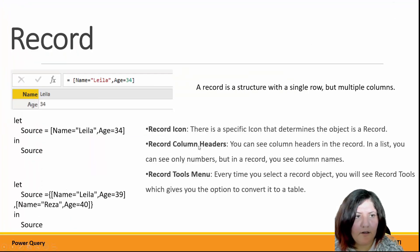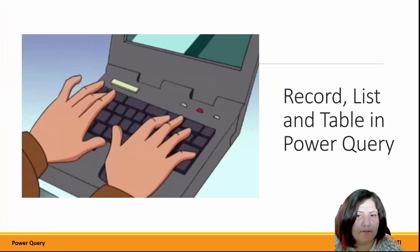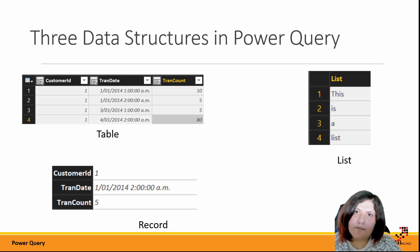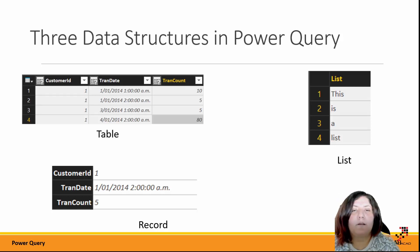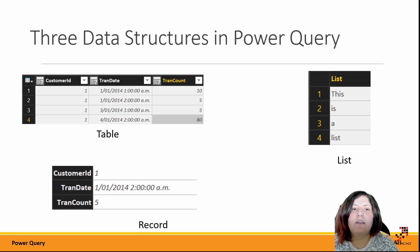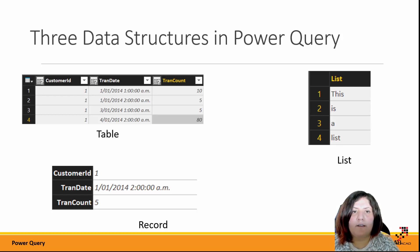These are the three main data structures in Power Query: list, record, and table. You may join tables together, see lists during aggregations, or find data from Excel or SQL coming in as records or tables — and you can work with all of them. Note that for R and Python, the only acceptable data structure is a table, which is equivalent to a data frame. I hope this video made it clearer what table, record, and list are — thanks for watching.